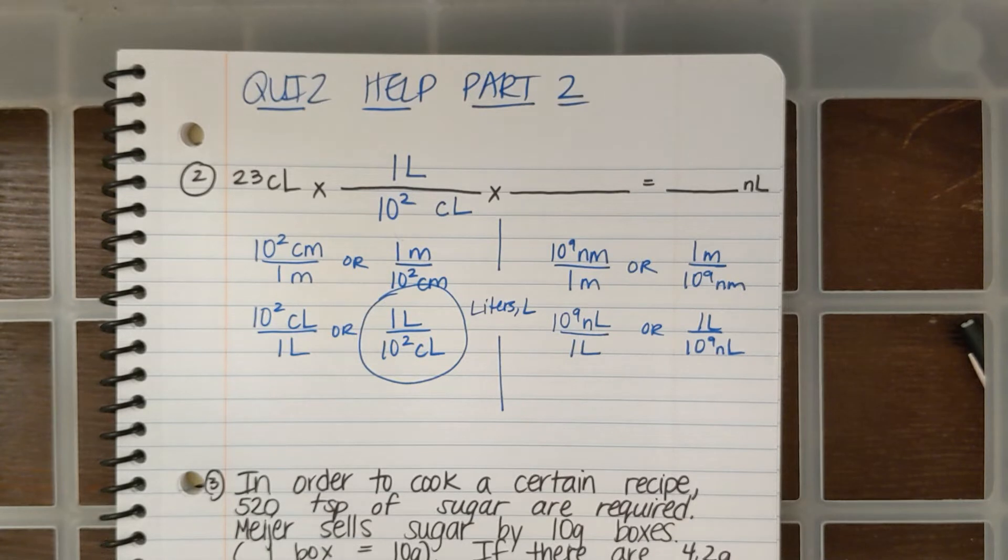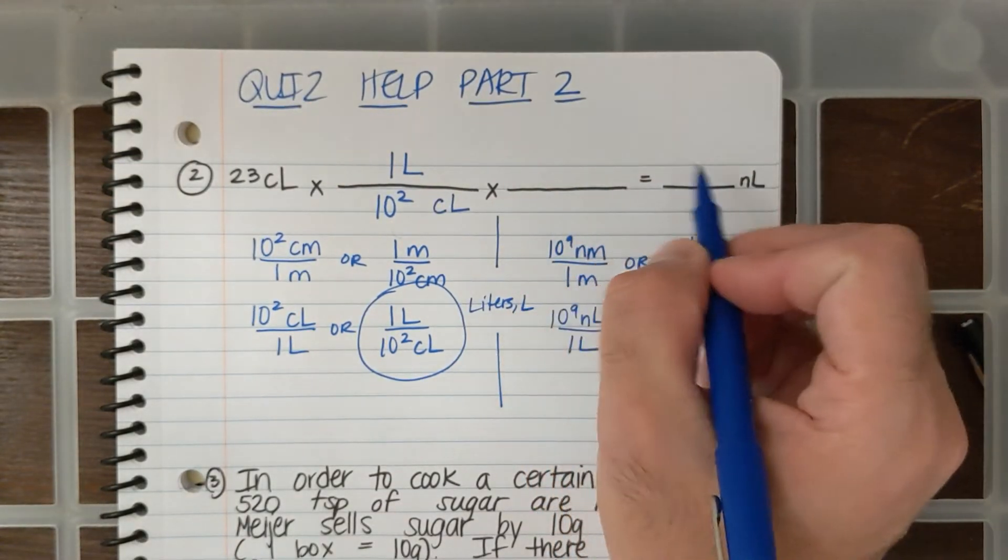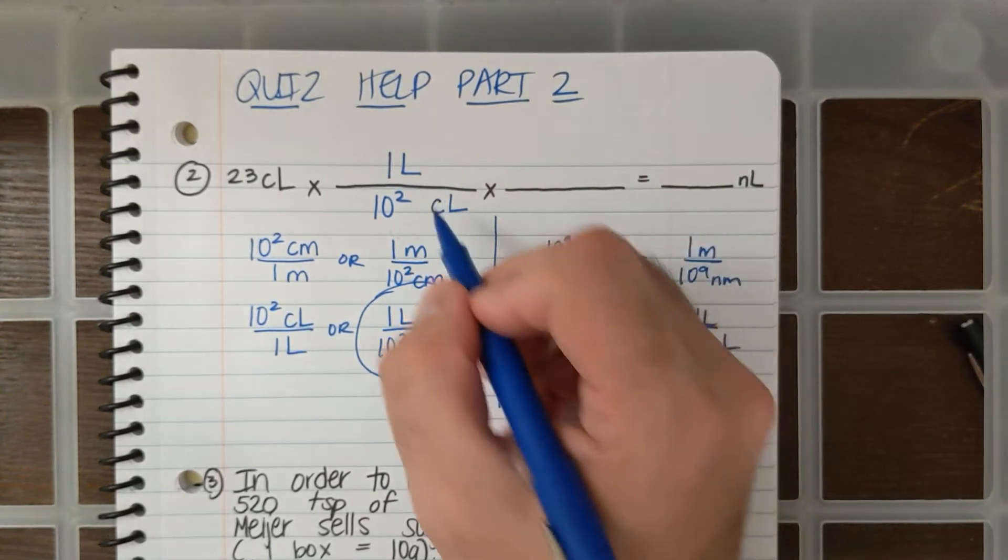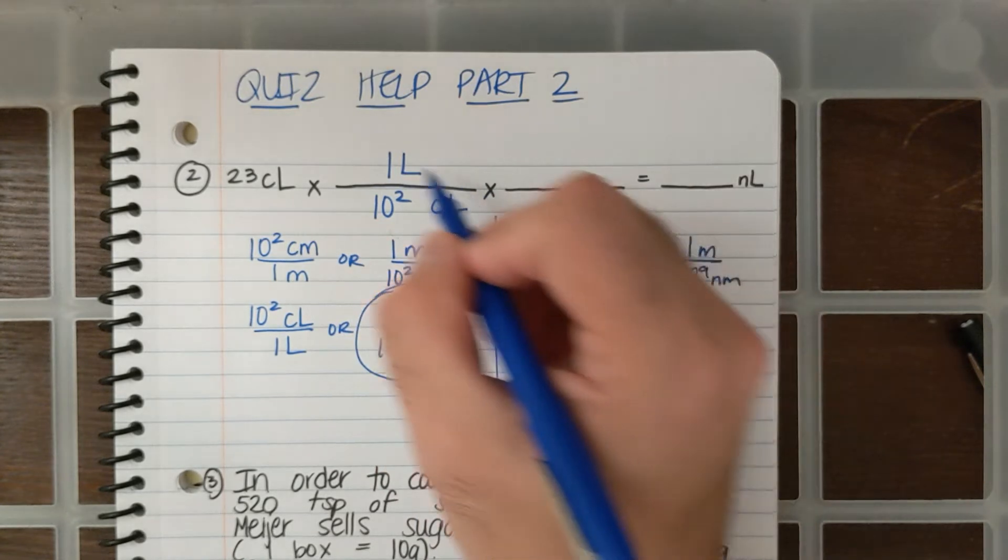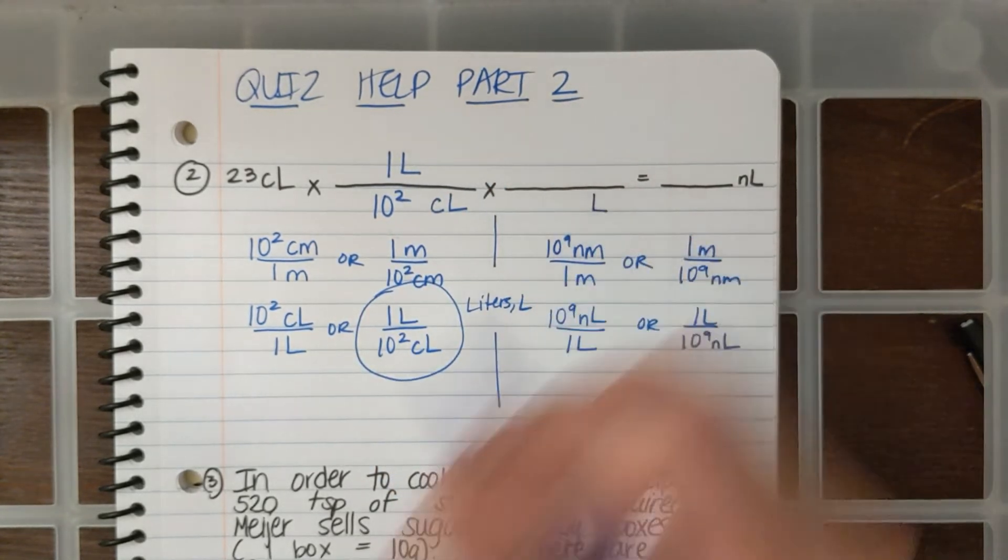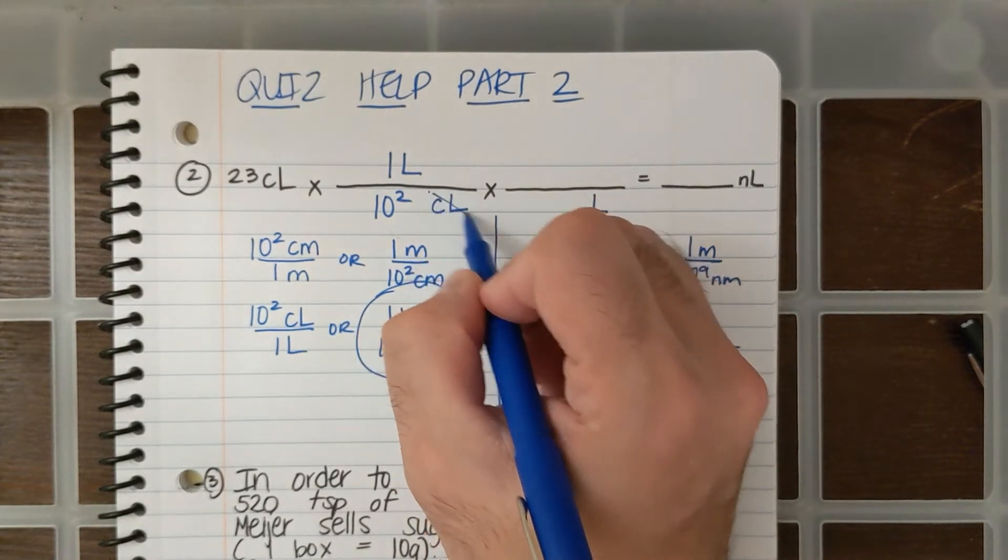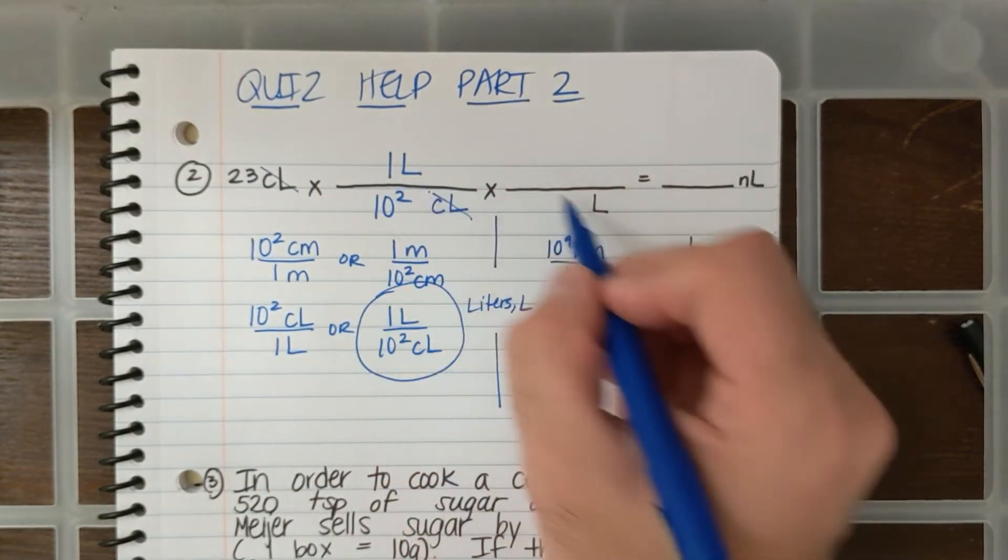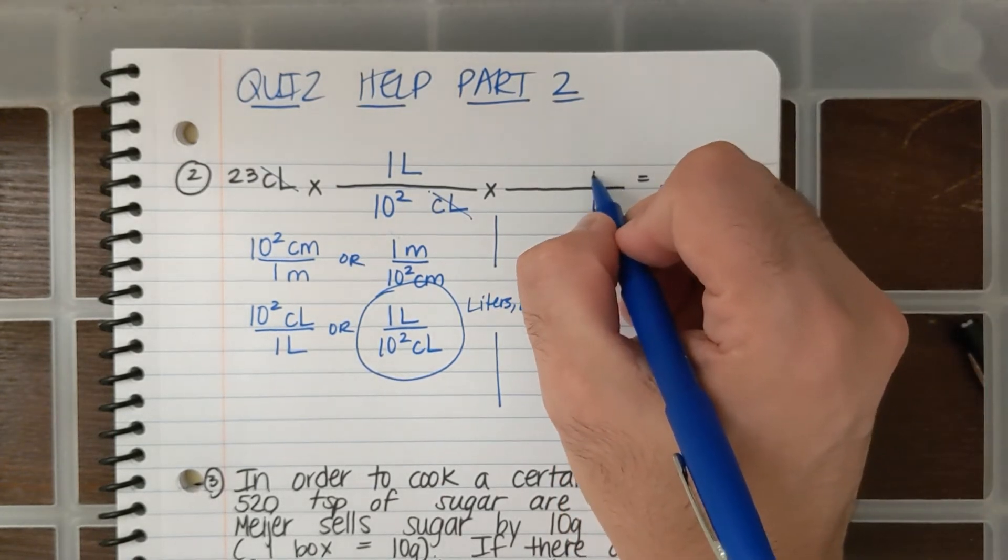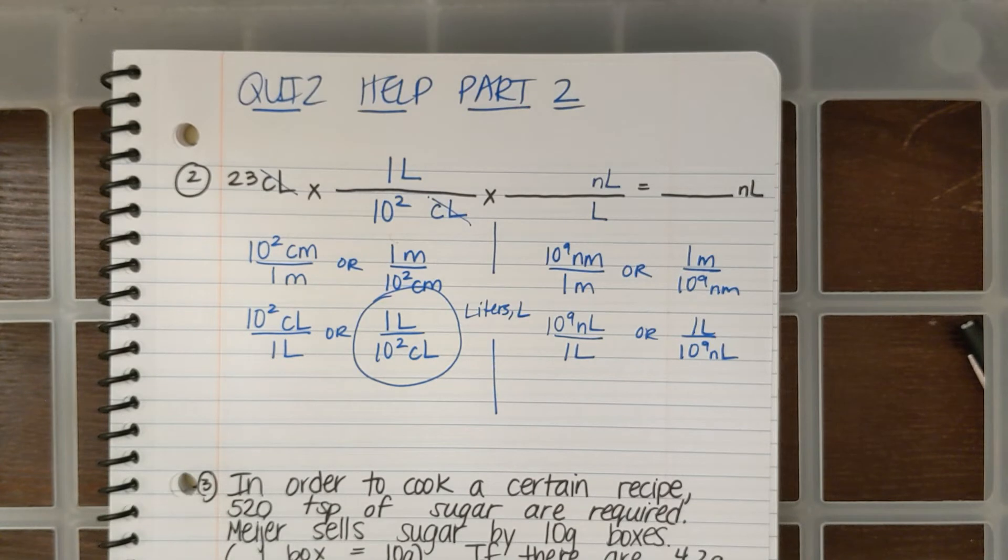Okay. And then what I want to do is I want to convert, and I want nanoliters. So I need to have nanoliters on top because I want that, and now I have liters on the top here. Whatever I have on the top in the previous fraction goes on the bottom in the next fraction. These CLs are going to cancel out. I have liters at top here. That means I need liters here, and I want nanoliters.